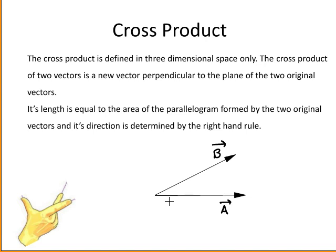The cross product is defined in three dimensional space only. The cross product of two vectors is a new vector which is perpendicular to the plane of the two original vectors.